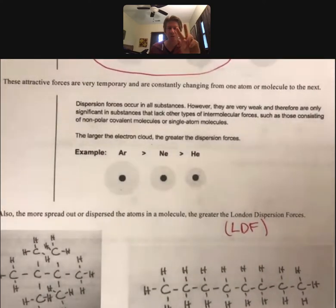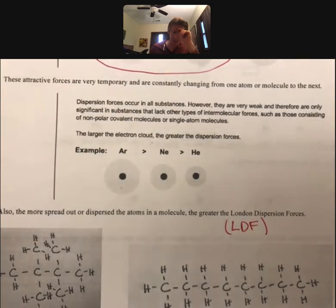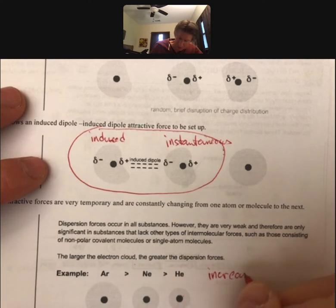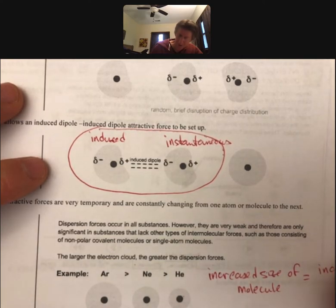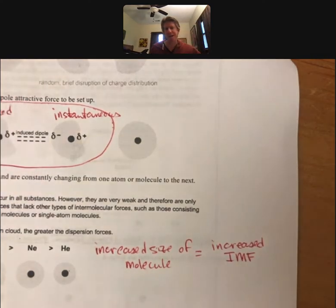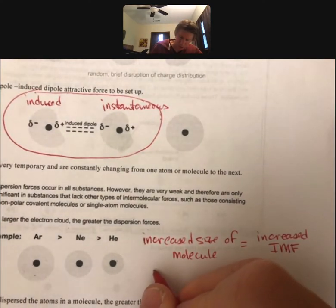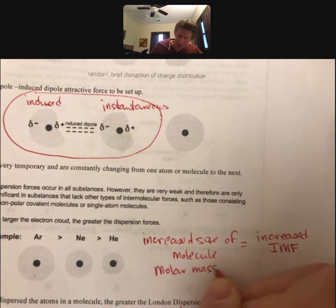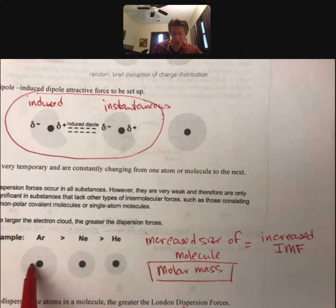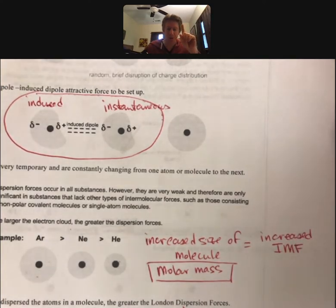So there's two things for London dispersion forces, LDFs. One of them is the size of the molecule. So increased size of molecule equals increased IMF. And because we don't always know the size of the molecule per se, we're going to use molar mass as an indication of size. So argon has a larger molar mass than neon. Therefore, it has larger dispersion forces.